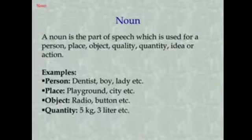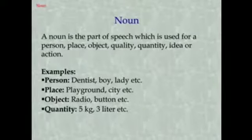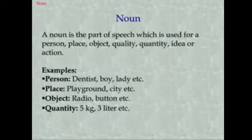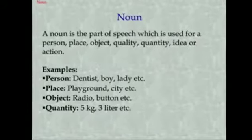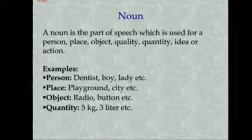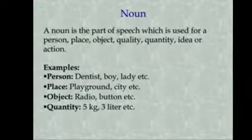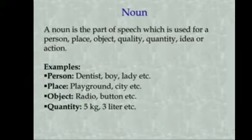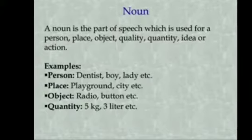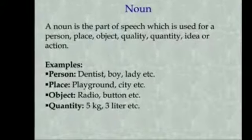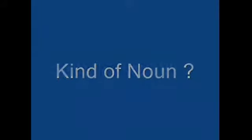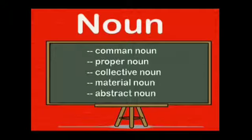So you understood what is a noun? In other words, we can also say that all naming words are nouns. Now we will read the kinds of noun. You can see on the screen that there are 5 kinds of noun.